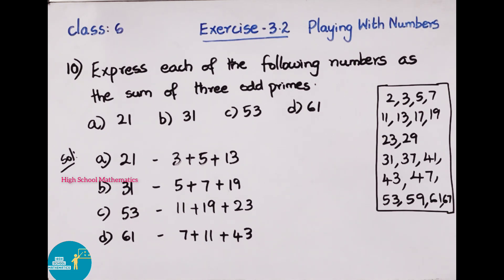Next, c) 53. 53 can be written as 11 plus 19 plus 23. 11 plus 19 is 30. 30 plus 23 is 53. Next, d) 61. 61 can be written as 7 plus 11 plus 43. 7 plus 43 is 50. 50 plus 11 is 61. So we have written all these 4 sums in the terms of sum of 3 odd primes.